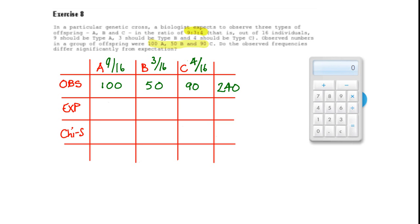A quarter should be type C. A quarter of 240 is 60. 3 sixteenths should be type B, and that's 45, and lastly 9 sixteenths, or 135, should be type A.